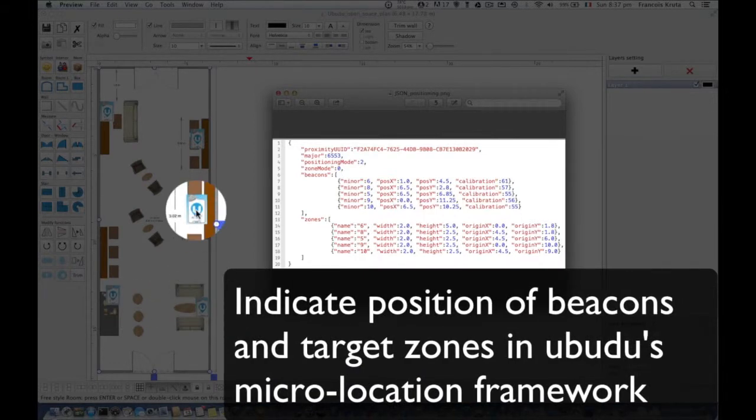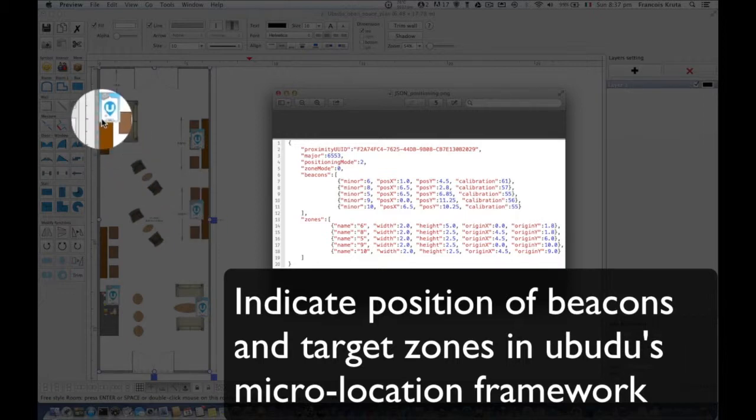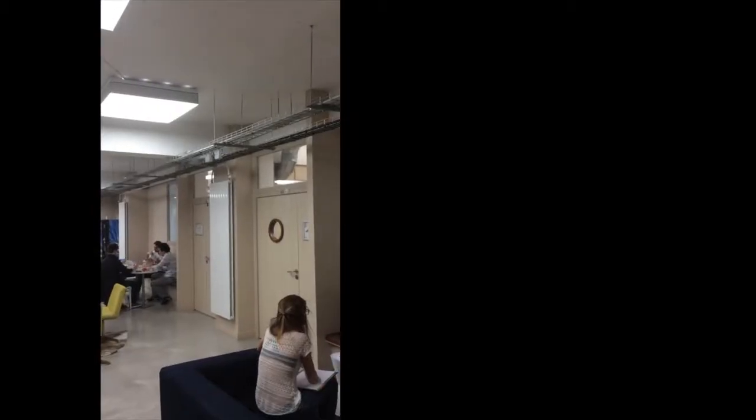We just indicate the position of the beacons into the plan and the target zones it should detect. This is input in a JSON file which is added to the project.